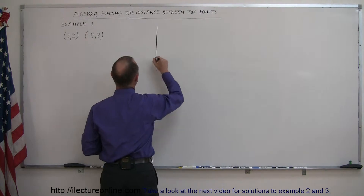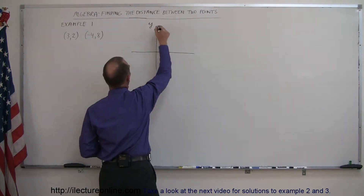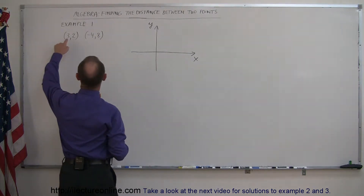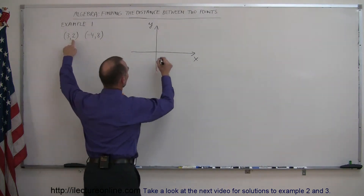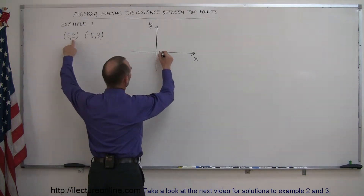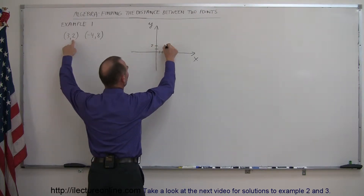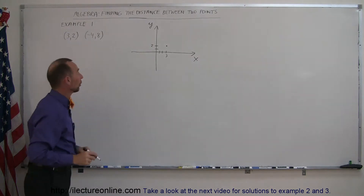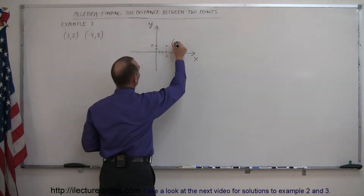Let's draw an x-axis and a y-axis. The first point has an x-coordinate of 3 and a y-coordinate of 2. So counting across to 3 and up to 2, where those two lines meet — that's our first point, and let's label it.